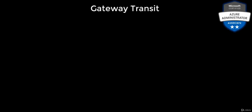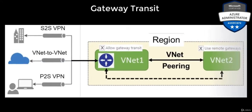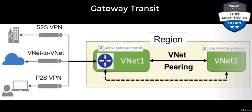Gateway transit. We just spoke about the gateway transit in the previous video. Let's talk about it with certain pictorial representations. When you allow gateway transit, the virtual network can communicate to resources outside the peering.